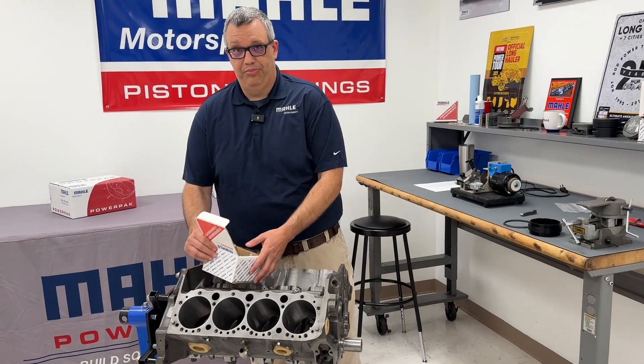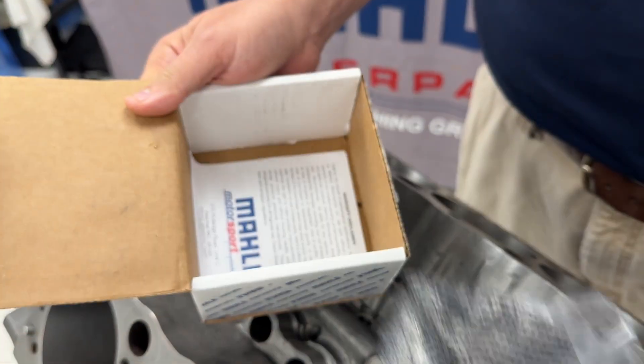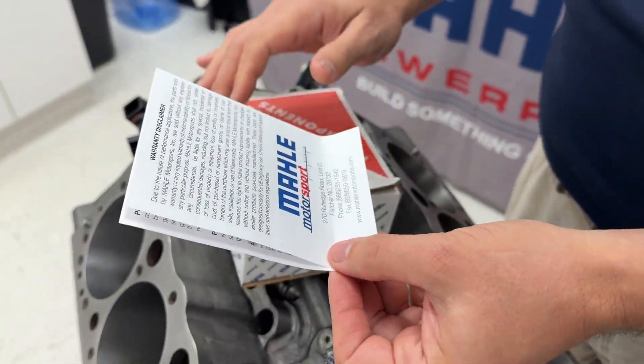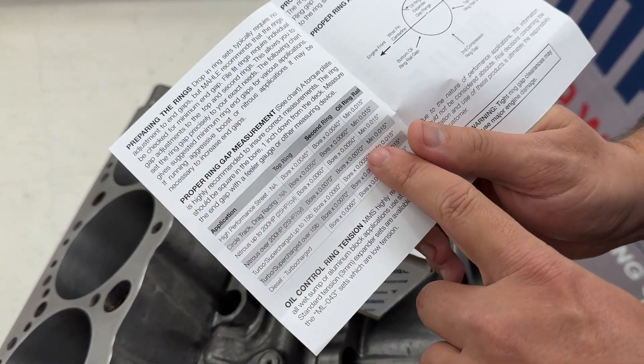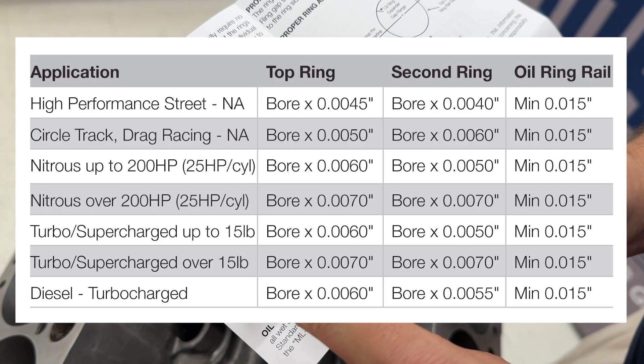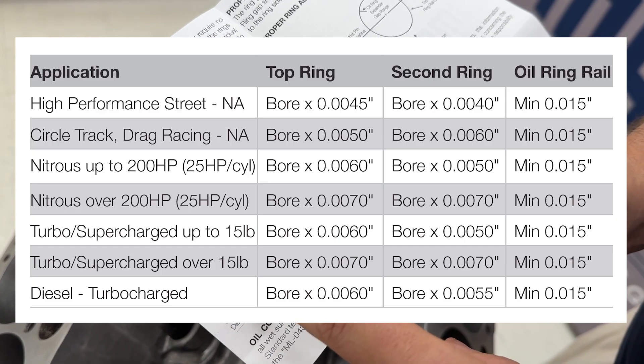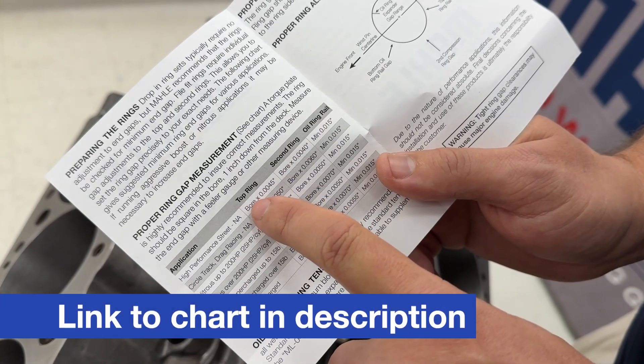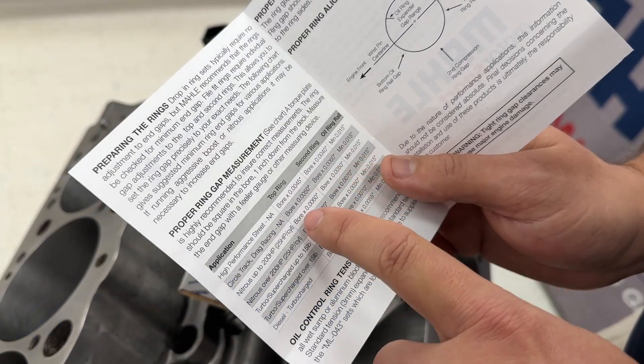So once you open your power pack kit, you'll find your ring box here. And in the bottom underneath your rings is our instructions. There's a chart in here that's going to show you what we're going to gap our rings to. So depending on your application, it will vary for high performance street, circle track, drag racing, nitrous, large nitrous, small boost, large boost, and diesel. We actually multiply our bore size in inches by this factor here, and that gets us what our gap would be.